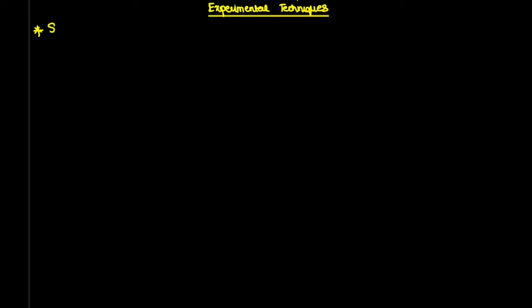Now we'll move on to sublimation. When do we use sublimation? For example, let's say I have two solids that are mixed up — solid one and solid two. I was transporting one of them and solid one fell into solid two. Now solid one is sublime and solid two is non-sublime.